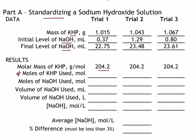We want to find the moles of KHP that were used. We know the mass was 1.015 grams and we know the molar mass. We can use moles equals mass divided by molar mass. Grabbing a calculator: 1.015 grams divided by 204.2. Watch your significant digits — four digits in the mass and four in the molar mass, so we keep four digits. The moles are 0.004971 moles.